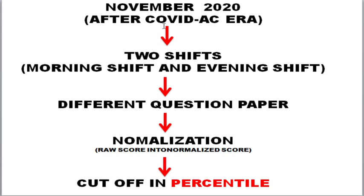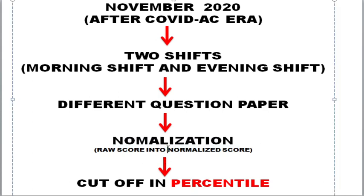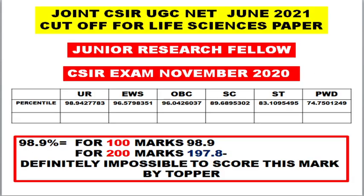November 2020 was in the COVID era. NTA decided to conduct the exam in two shifts — morning and evening. Out of, say, one lakh students, 50,000 wrote in the morning shift and 50,000 in the evening shift. Since they couldn't set the same question paper for both shifts, different papers were used. NTA then incorporated normalization, converting all raw marks into normalized marks to ensure no inequality or partiality, and the cutoff was released in percentile.